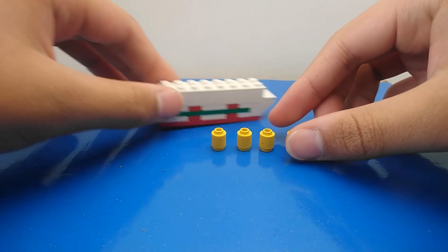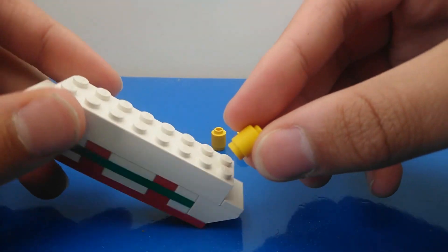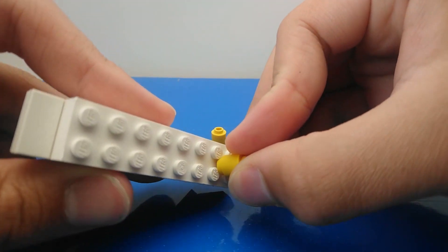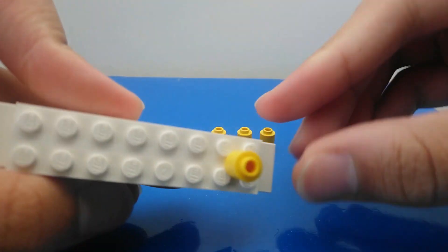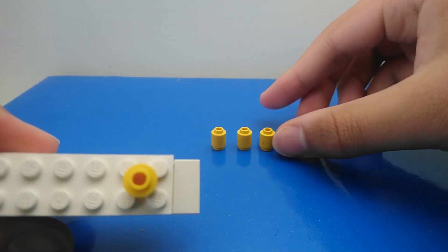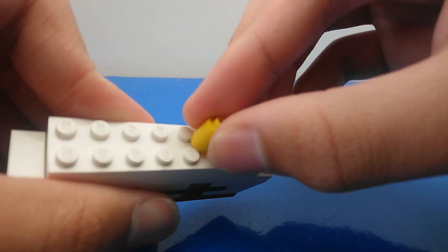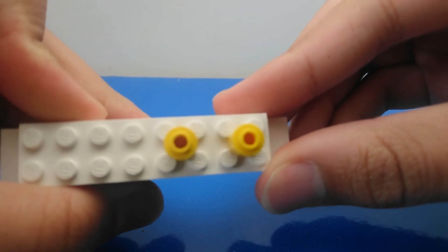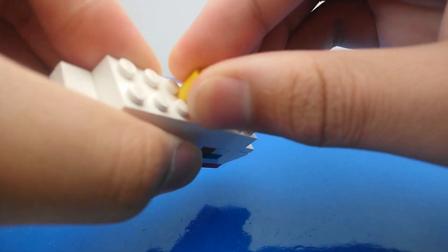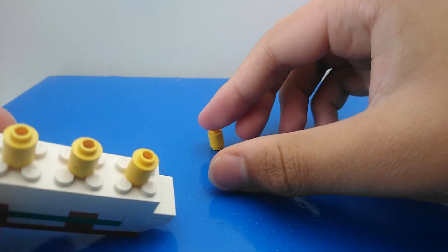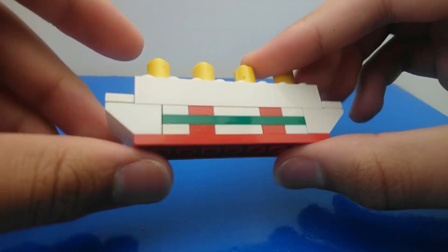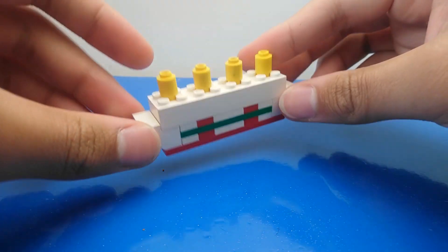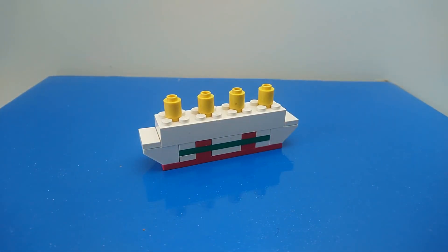So as we would normally do with any boat that has this similar design, we're going to take one and put it right at the end in the middle like that. Take the next one, leave a gap, put it in the middle. Take the next one, leave a gap, and put it in the middle. And finally take your last one and put it at the front or the back, because it looks the same.